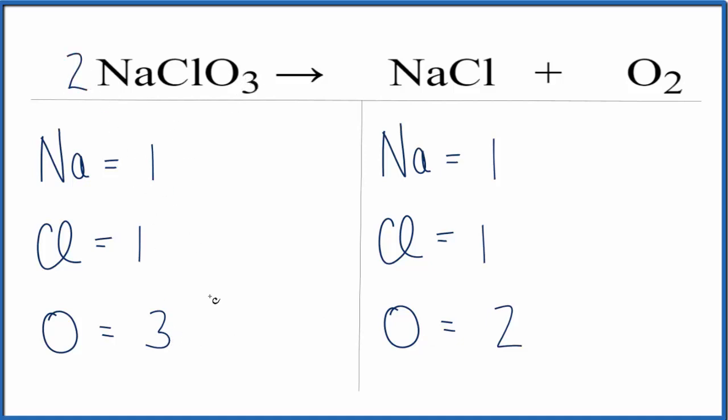So three times two, that'd give us six and this two applies to everything. So we need to update the chlorine and the sodium. So we have one chlorine times two, that'll give us two chlorines. One sodium times two, that gives us two sodiums.